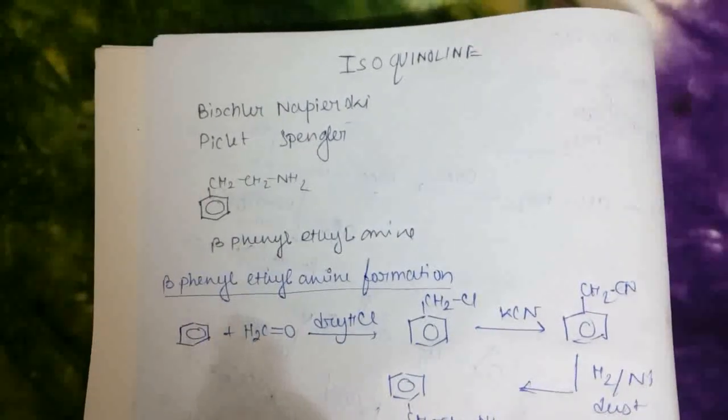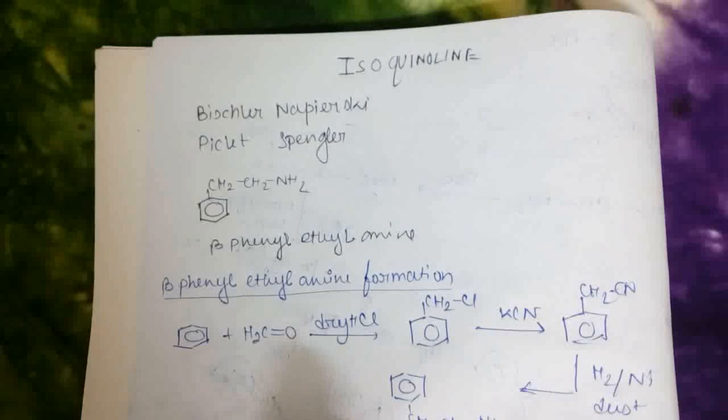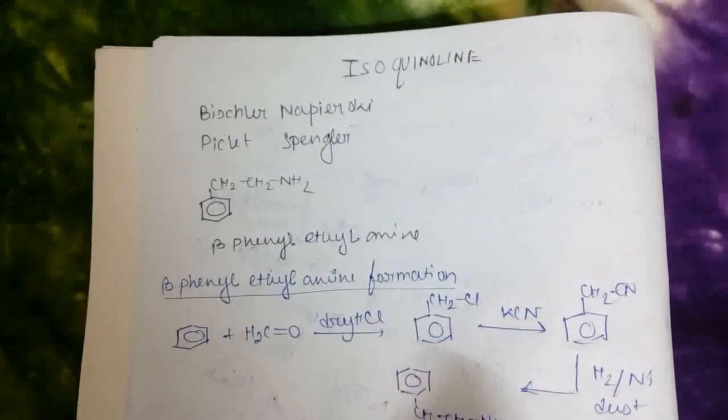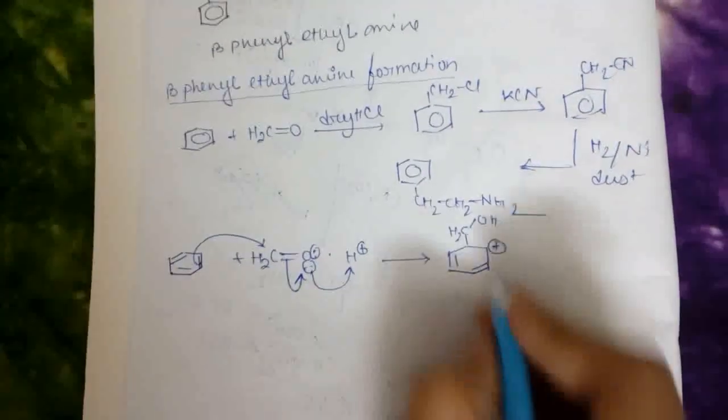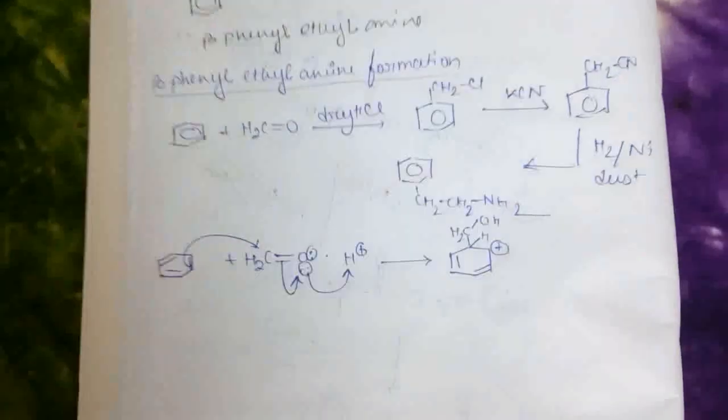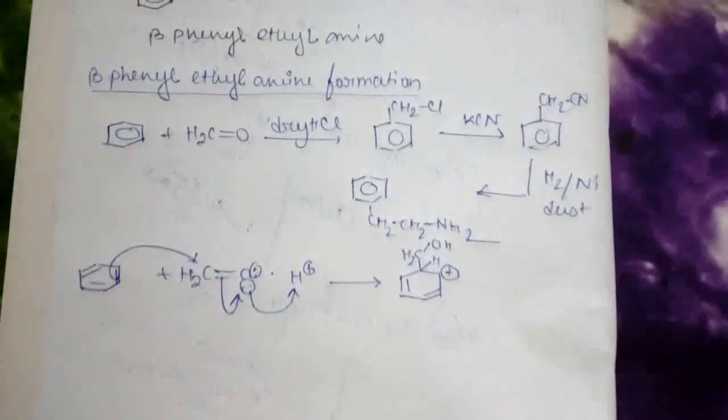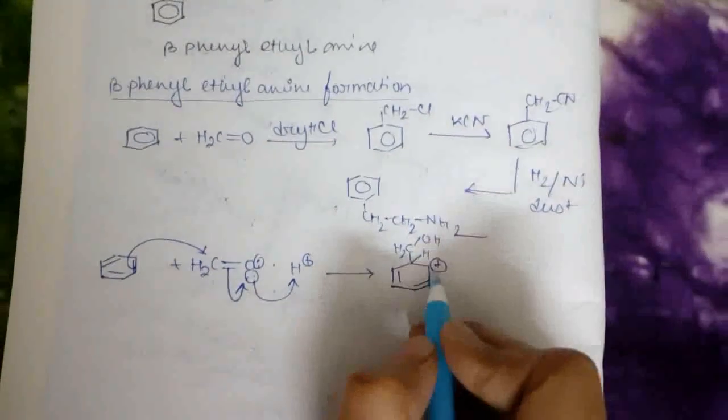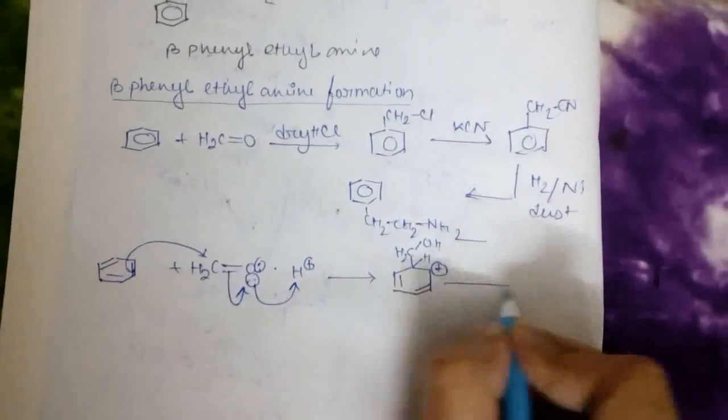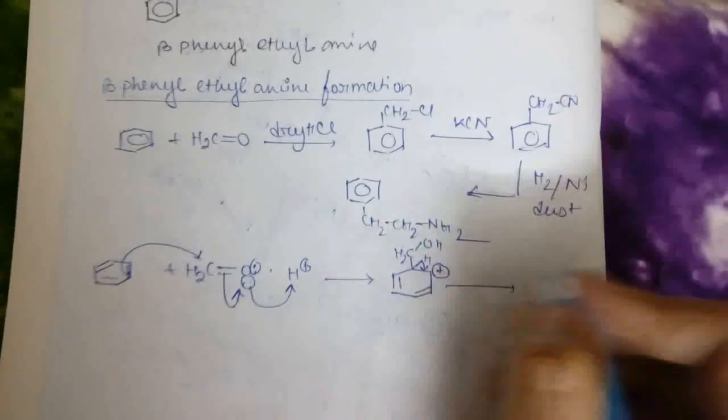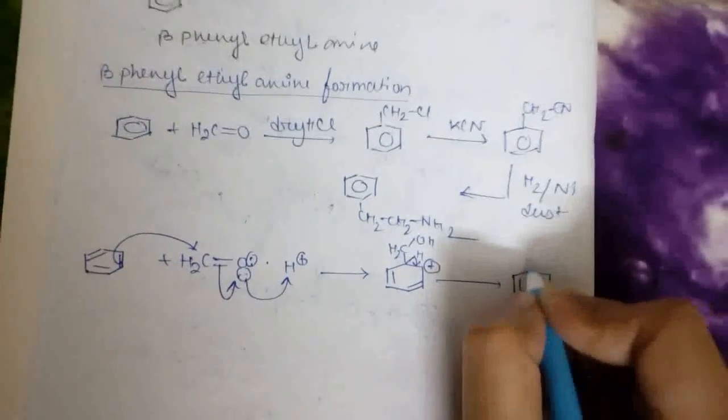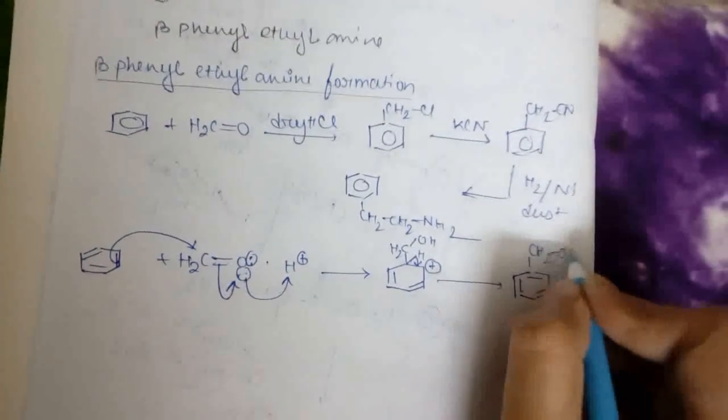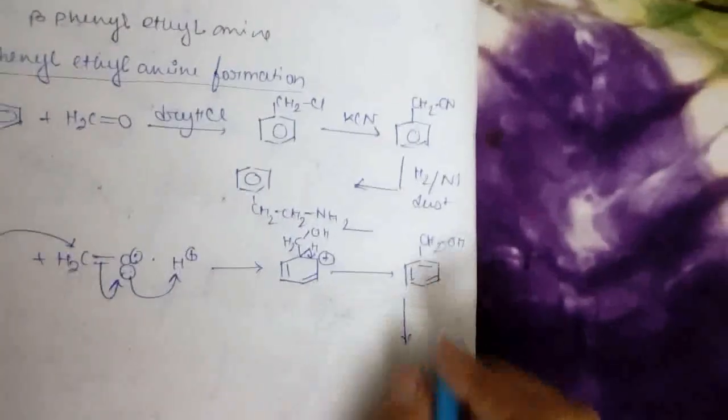benzene will attack the carbonyl carbon and this bond will open. Then to neutralize this positive charge in the benzene nucleus, this hydrogen forms benzyl alcohol. Then H+ again in the medium,